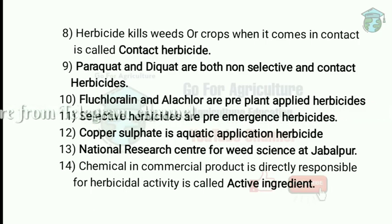Fluchloralin, used in pulse crops, and alachlor are pre-plant applied herbicides — meaning they are applied before planting the crop in the field. Selective herbicides used as pre-emergence herbicides are applied before the emergence of weeds but after crop emergence.